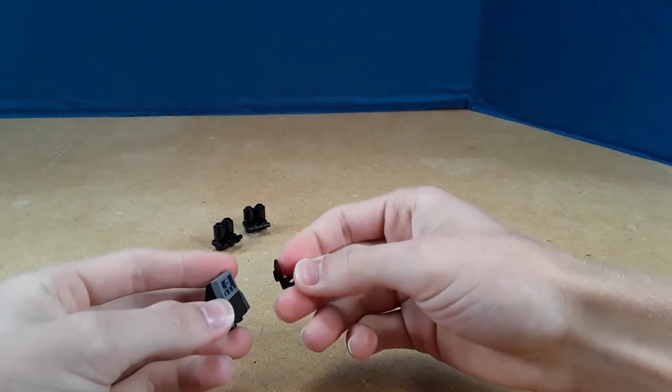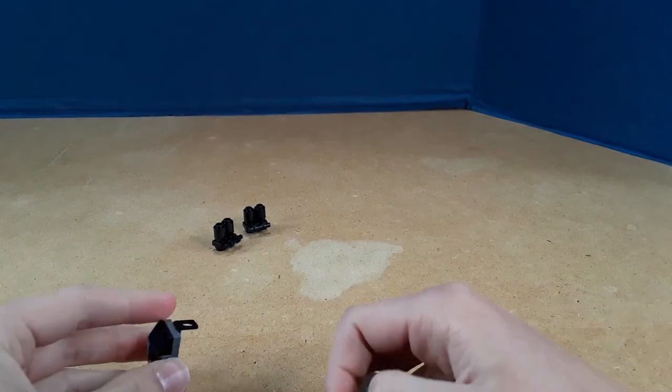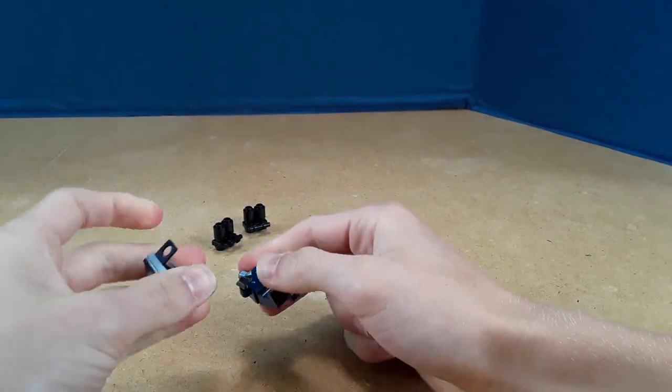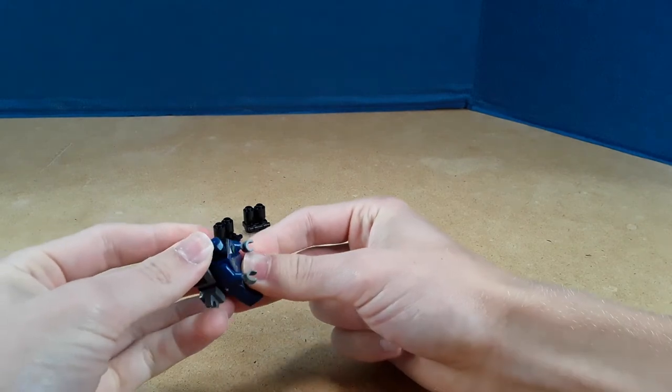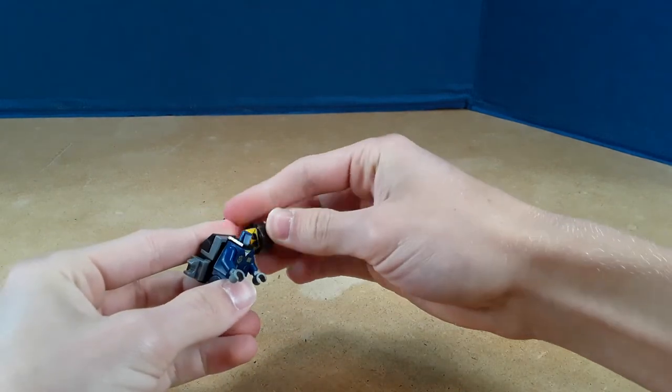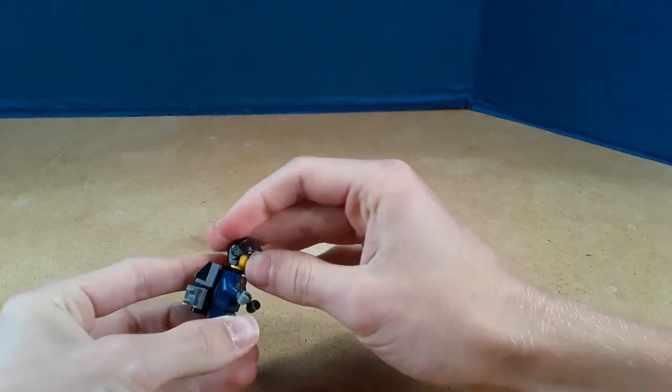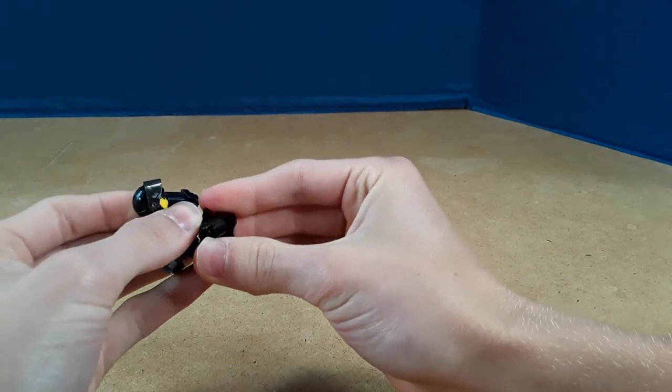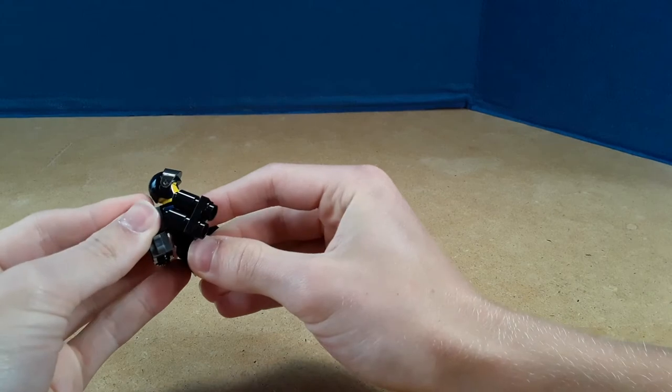So with this piece, you can just slide it over the neck, put the head back on, and there you have it: a jet suit so your minifigure can fly around.